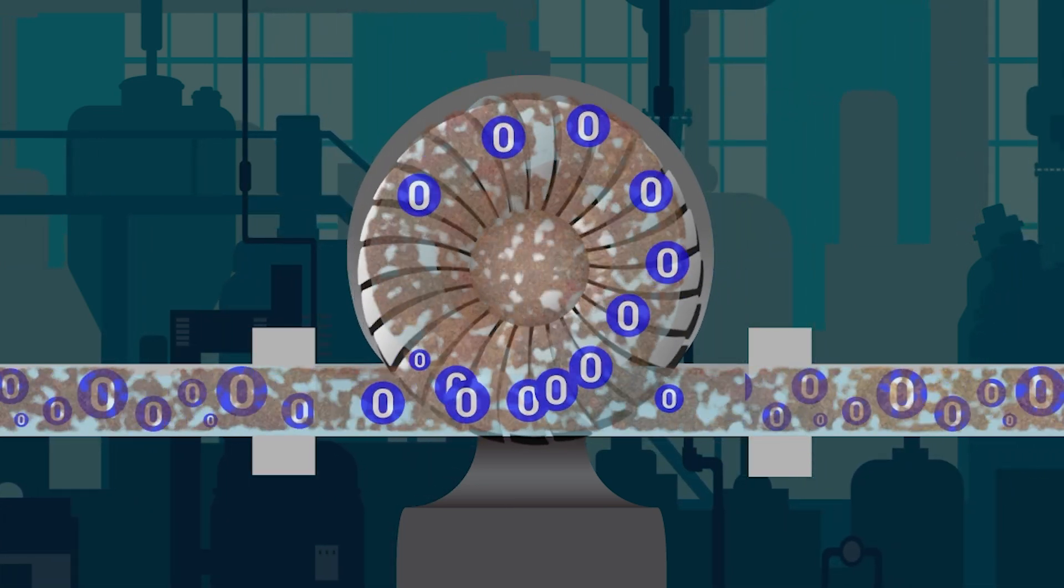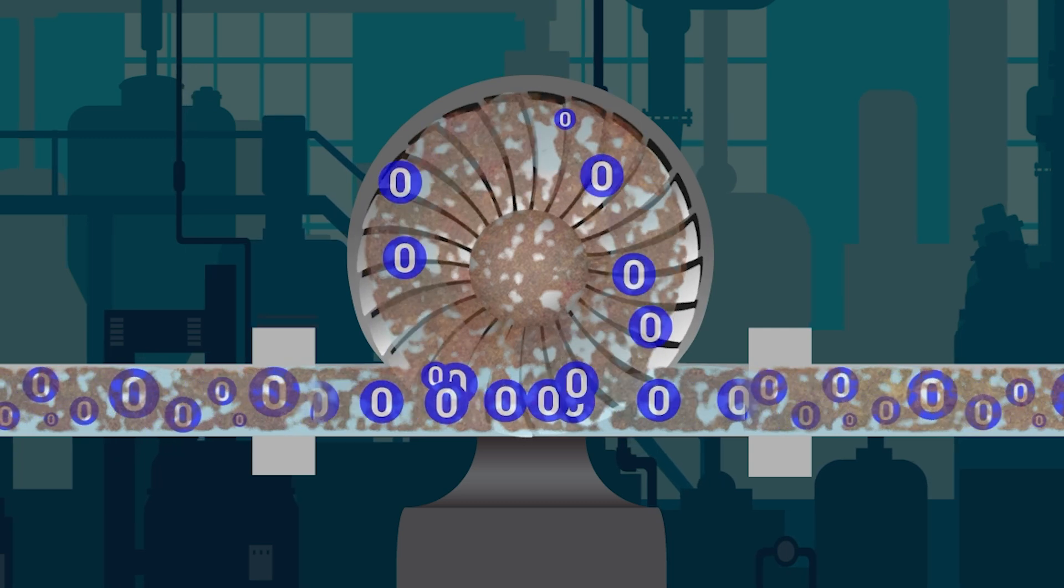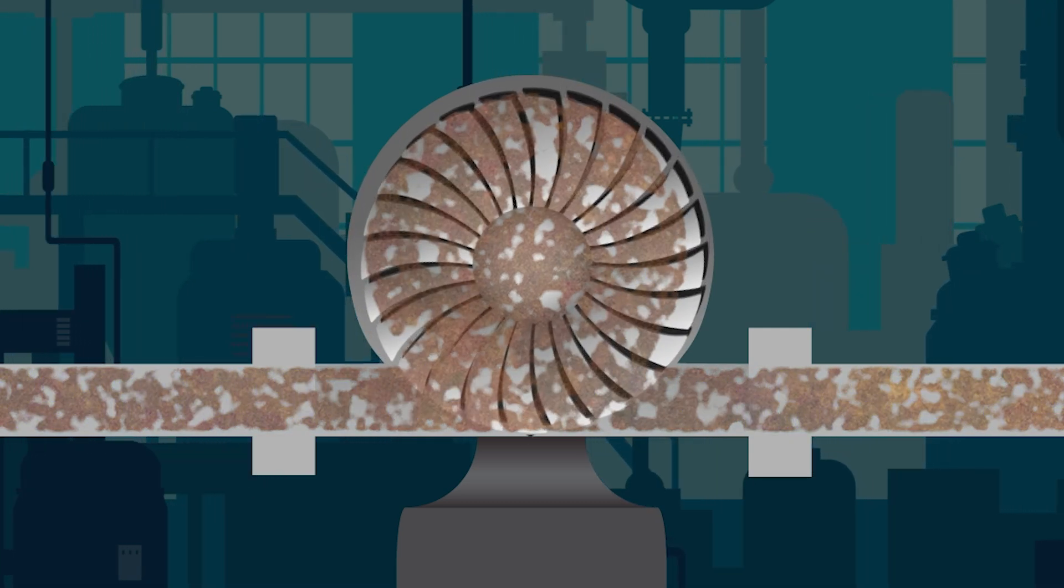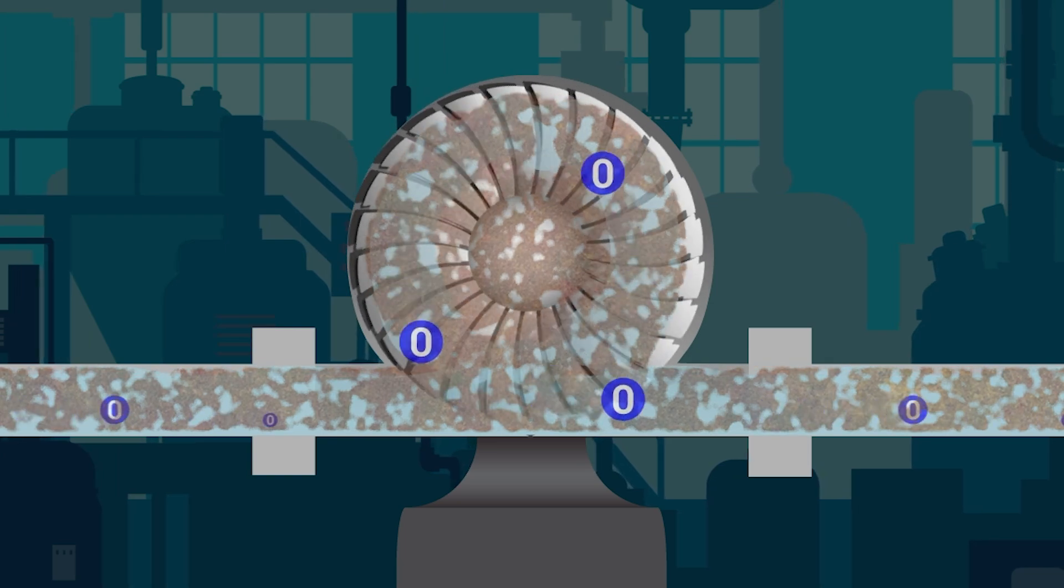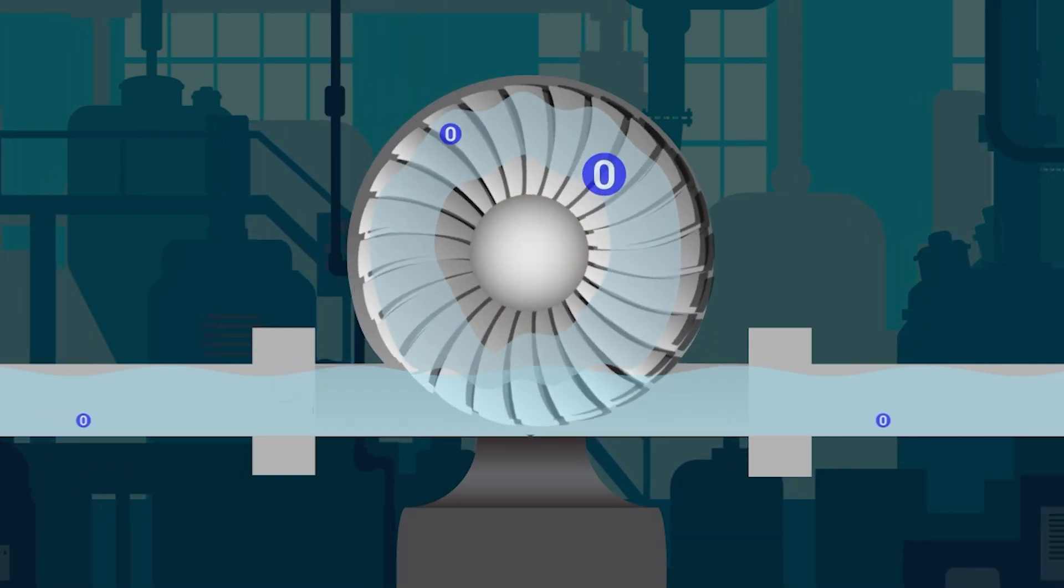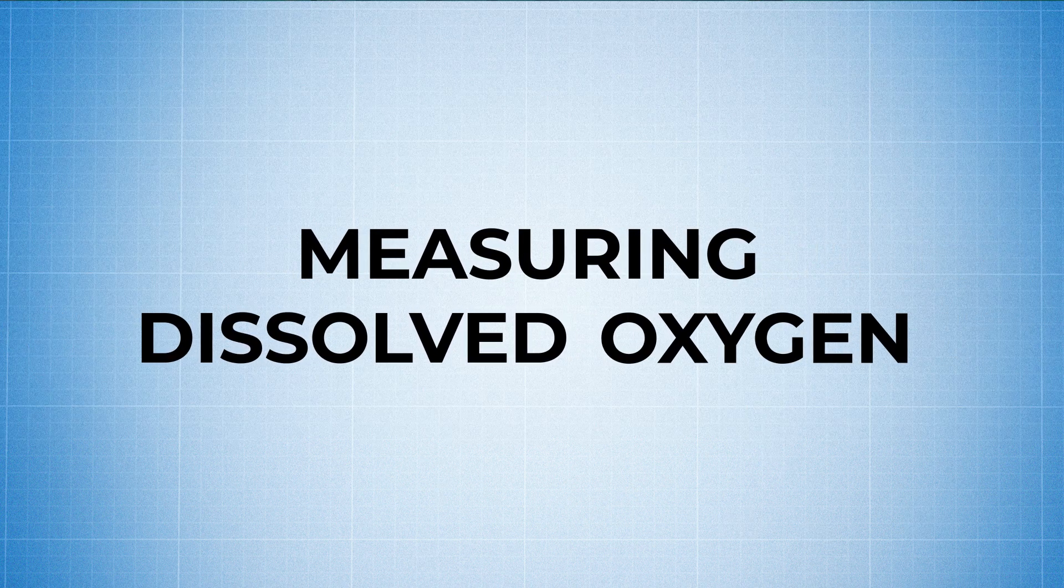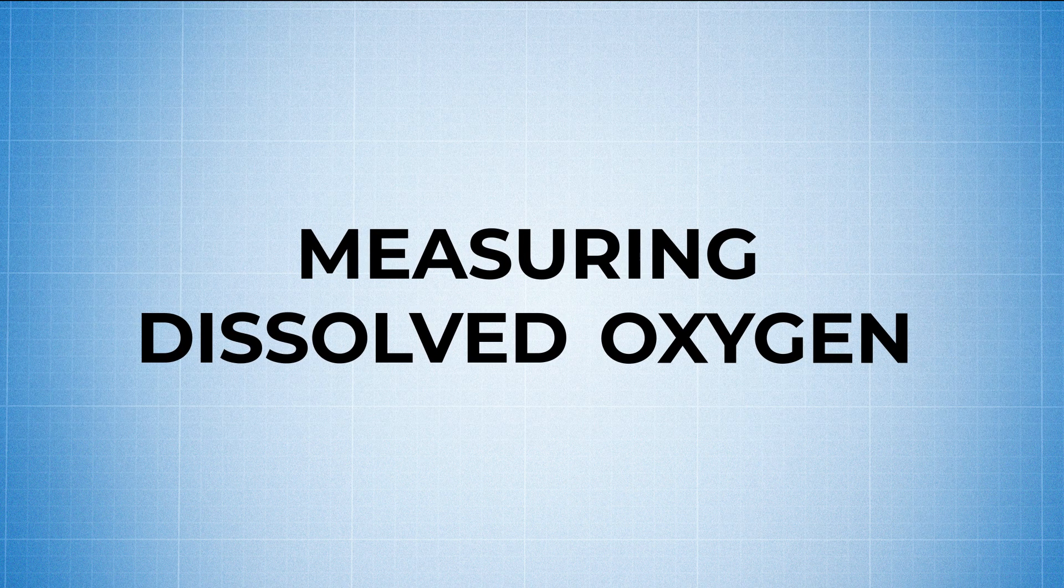Oxygen in water can accelerate rust and degradation of metals, leading to equipment failure, increased maintenance costs, and safety hazards. By managing dissolved oxygen levels, industries can minimize corrosion and extend the lifespan of equipment. Here are the two fastest and easiest ways to measure dissolved oxygen.